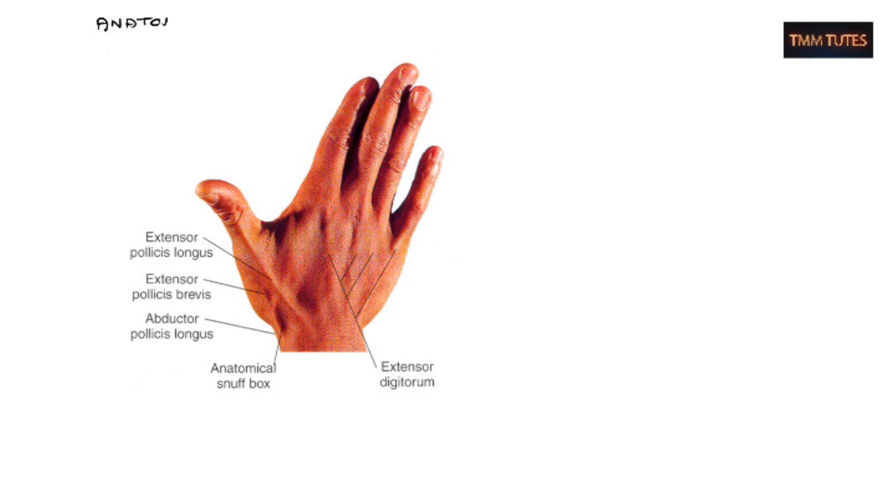So now let's look at the anatomical snuff box. So I want you to point your thumb up to the ceiling with your hand flat on the table. Now you'll see a little gap formed on the most lateral side. You can see on the diagram just there, you've got two tendons that form almost a little triangular box. You've got to extend quite hard, but you can feel along. And it's a very important clinical landmark for wrist injuries. So it's actually floored by scaphoid, a carpal bone.